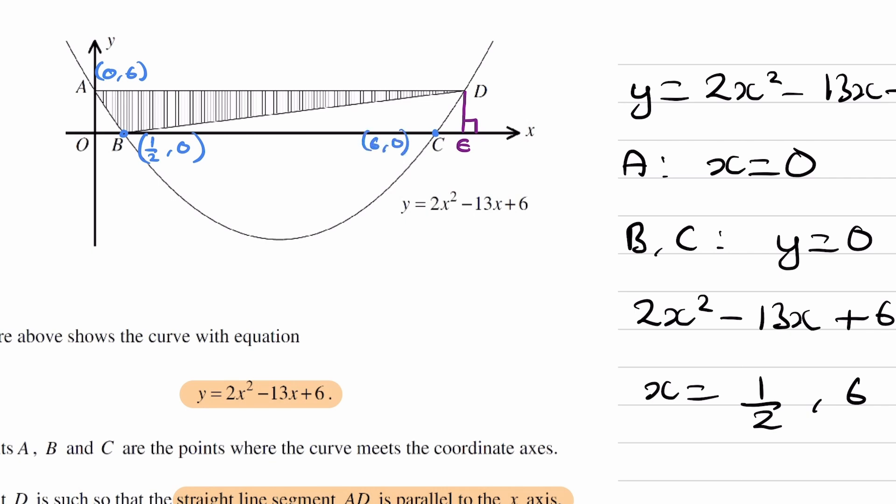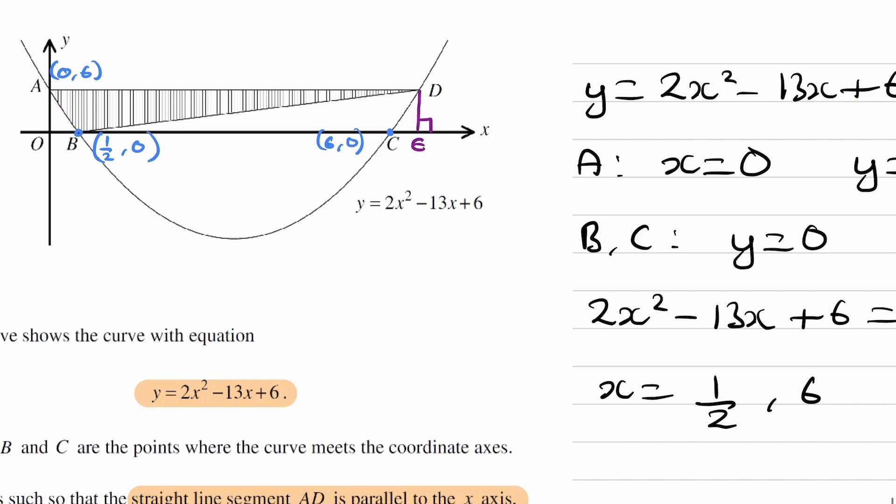We can work out what point E is now as well. This is a quadratic. That is a symmetrical shape. So if we know that point A is 0.5 away from point B on the x-axis, then point D would be 0.5 away from C on the x-axis as well. So point E and point D, these two points, will both have x-coordinates of 6 plus a half. So then point E would be 6 and a half, which is 13 over 2, 0.